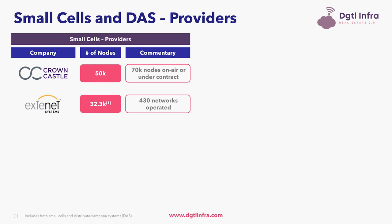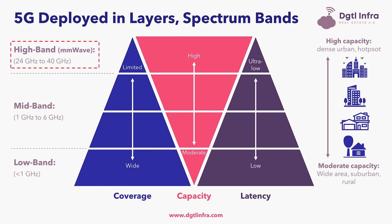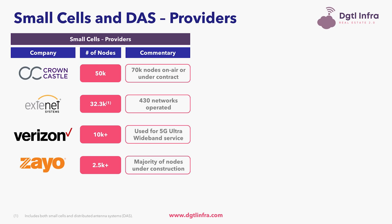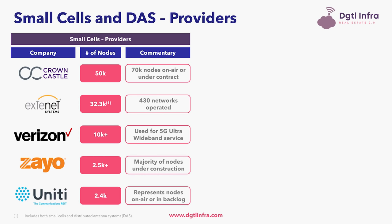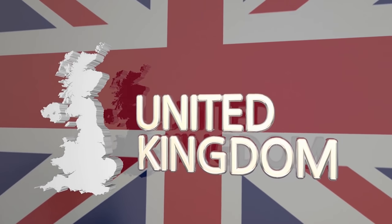Second is Extinet Systems, which has 32,300 nodes, although the majority of them are distributed antenna system sites, and it has 430 networks. Third is Verizon, which is actually self-performing the small cells for its own use. In 2020, Verizon deployed 10,000 small cells in order to use more of its high-band millimeter-wave spectrum for what it brands as 5G Ultra Wideband. Fourth is Zeo, which has over 2,500 small cell nodes. And fifth is Unity Group, which has 2,400 small cell nodes installed or in backlog. It's also worth highlighting Fresh Wave Group, which is owned by Colony Capital and has 5,000 nodes in the United Kingdom and 150 networks.